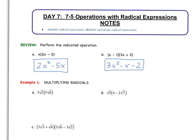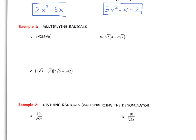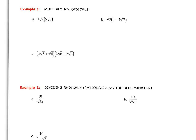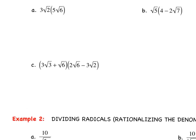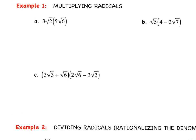Now we are going to continue with multiplying radicals, and remember what we talked about yesterday. The first thing we need to do is multiply the coefficients times the coefficients, and then the radicands times the radicands. Looking at this first example, 3 root 2 times 5 root 6: we multiply 3 times 5, then 2 times 6 under the radical. We get 15 times the square root of 12.